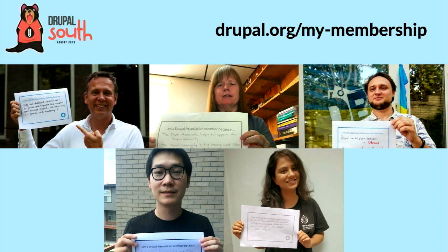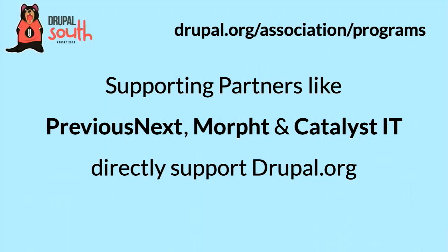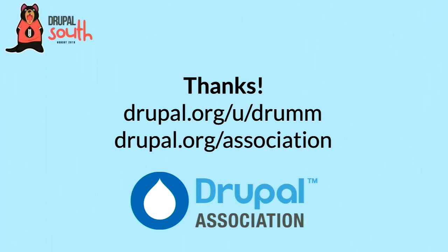The ways to support us: membership is the easiest way to support us financially, either as an individual or as an organization. It starts at pretty affordable rates with a sliding scale. For organizations, the supporting partners program means money we get from supporting partners is directly earmarked for supporting Drupal.org. We're always looking for more supporting partners. Thanks to Previous Next, Morpht, and Catalyst — the ones I saw from this region. Other benefits include increased visibility on Drupal.org and a boost in the marketplace rankings. If you have questions or something you want to work on, I'll be around — you can use my contact form on Drupal.org or find me on Slack.